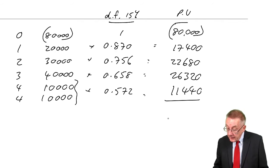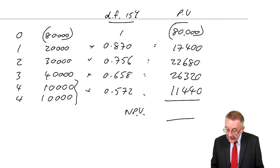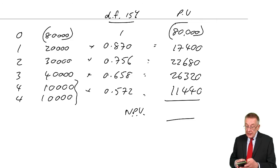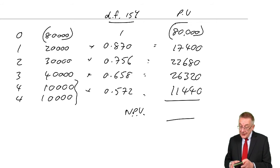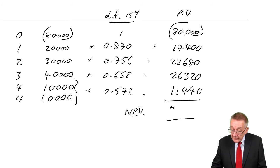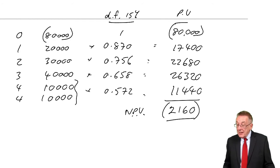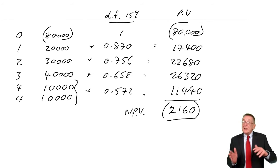With interest cost of capital at 15%, the net present value, the inflows of 17,400 plus 22,680 plus 26,320 plus 11,440 minus the outflow of 80,000. I hope you did have a go yourself, but you should have got a negative NPV of 2160. As you'd expect, it is lower. Higher cost of capital, higher cost of money, lower NPV.